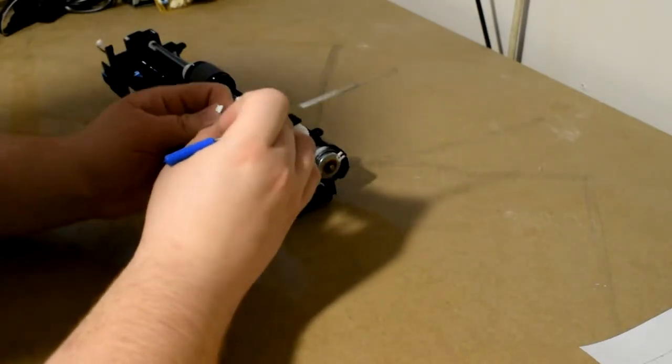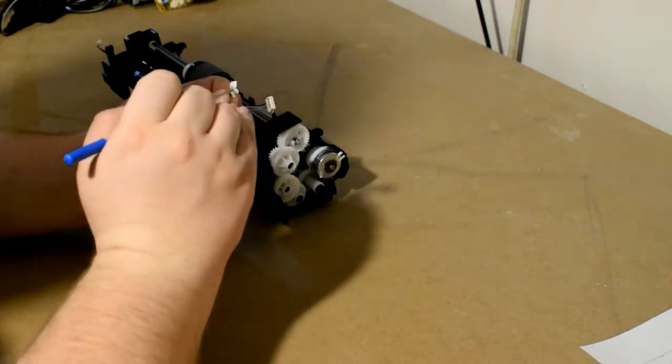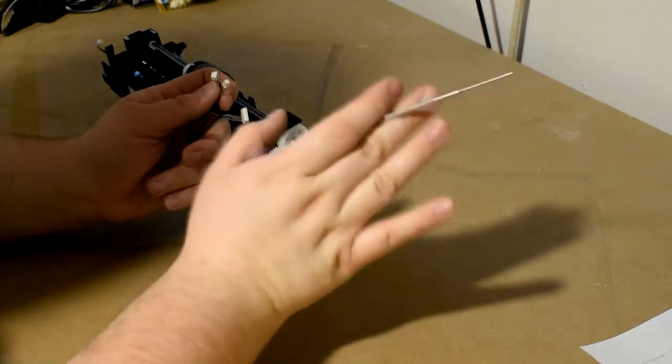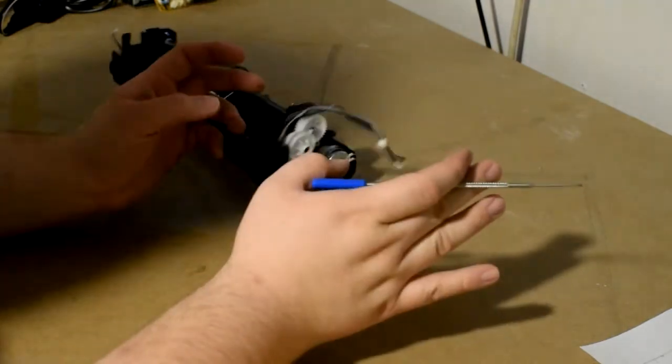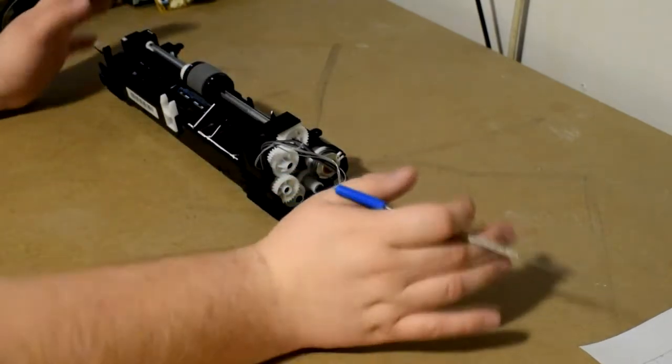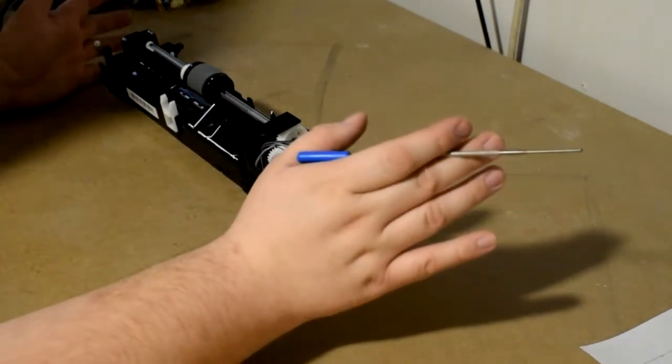But yeah, mostly, if you look, every connector is different, even though these are two-wire, different pin-outs. It's very rare to run across a printer where all the connectors are the same. So typically, you can get it back together even if you didn't know where it went to, but it's always best practice to take a picture.